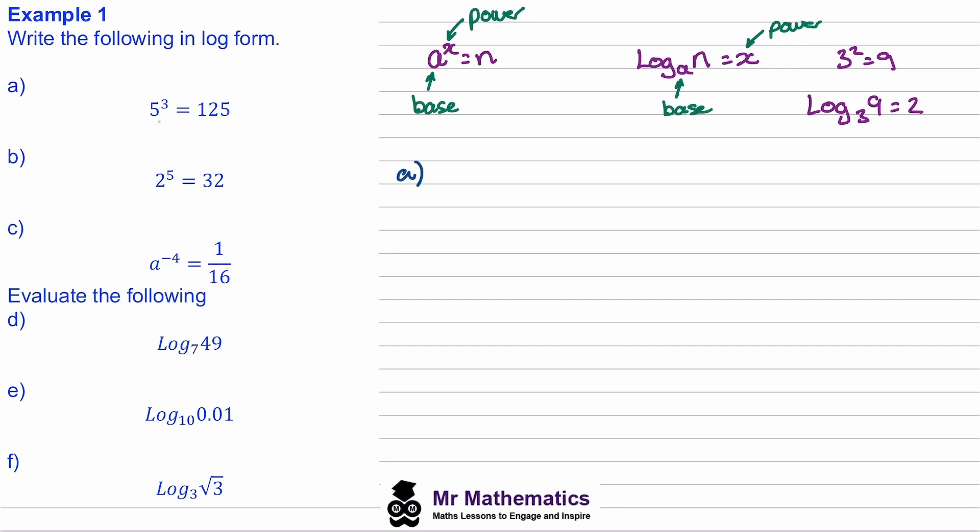Okay, so for question a, to write this using logs, we'll say the log of 125 to a base of five is equal to three. Do you want to try and write question b and c in logarithm form? You can pause the video, and when you come back we'll go through the solution.